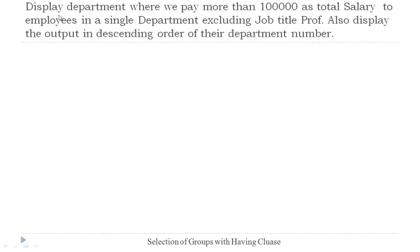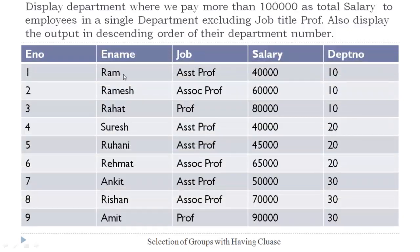Let us perform this task: display the department number where we pay more than 1 lakh as total salary to employees in a single department, excluding job title 'professor'. Also display the output in descending order of department number. This operation will be performed on the same employee database with 5 columns: enumber, ename, job, salary, and department number.